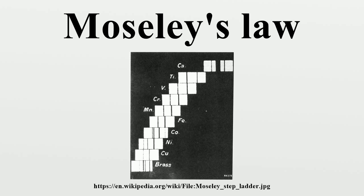Moseley derived his formula empirically by plotting the square root of x-ray frequencies against a line representing atomic number. However, it was almost immediately noted that his formula could be explained in terms of the newly postulated 1913 Bohr model of the atom, if certain reasonable extra assumptions about atomic structure and other elements were made. However, at the time Moseley derived his laws, neither he nor Bohr could account for their form.